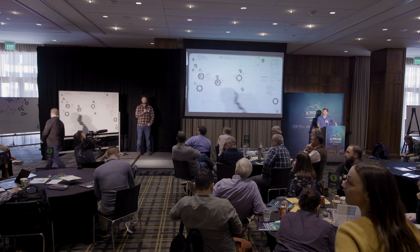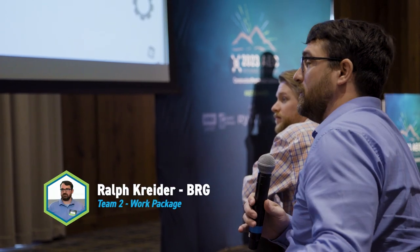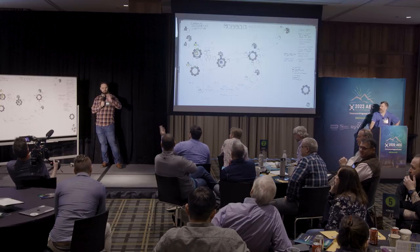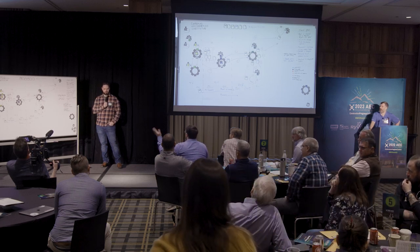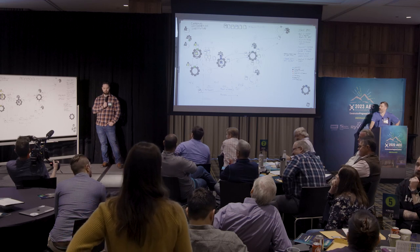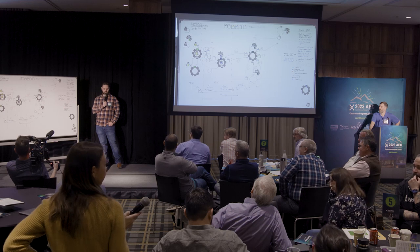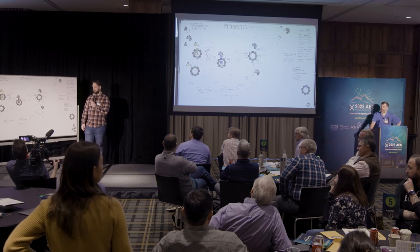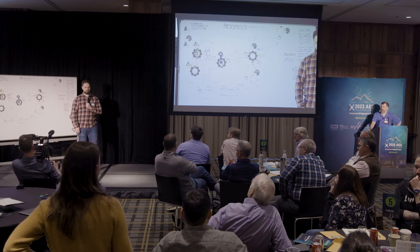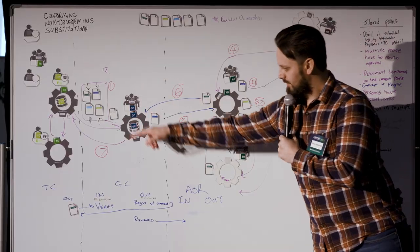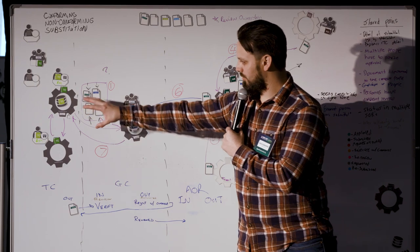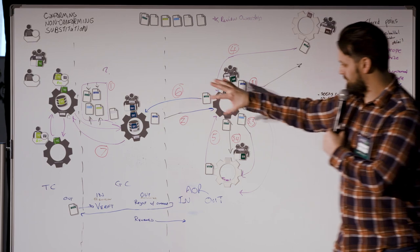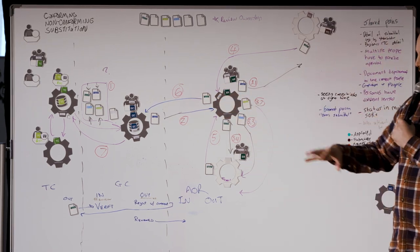Did you think about the concept of nested packages — multiple layers where a trade partner submits their piece and the GC packages that together? For example, doors and hardware: the architect wants to see it all in one package because they're interconnected, but you might have a hardware subcontractor and a door subcontractor each submitting separately. Someone has to aggregate all that together, and you can't approve one without the other — that's where the confusion comes in.